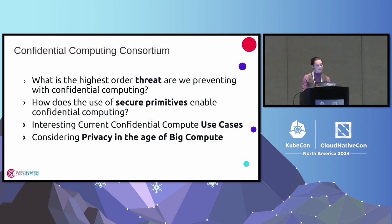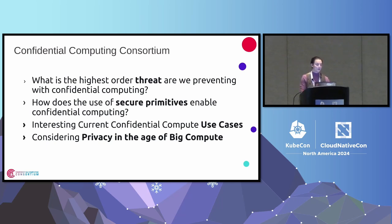In this talk today, we're going to talk about four things. One, what is the highest order threat that we are preventing with confidential computing? Number two, how does the use of secure primitives enable confidential computing? What are the interesting confidential compute cases right now? And how can we use this when we're considering privacy in the age of big compute?